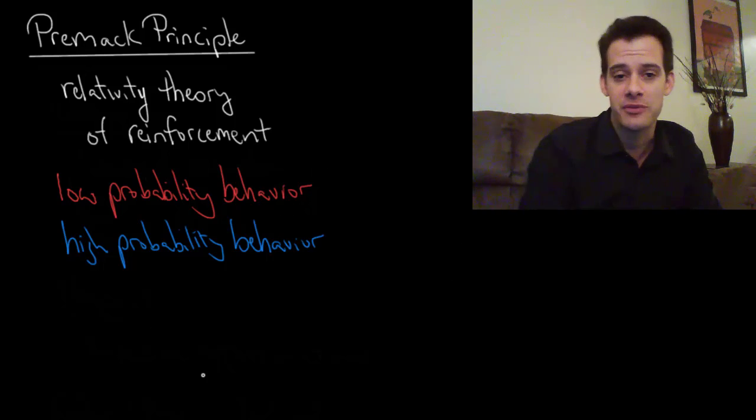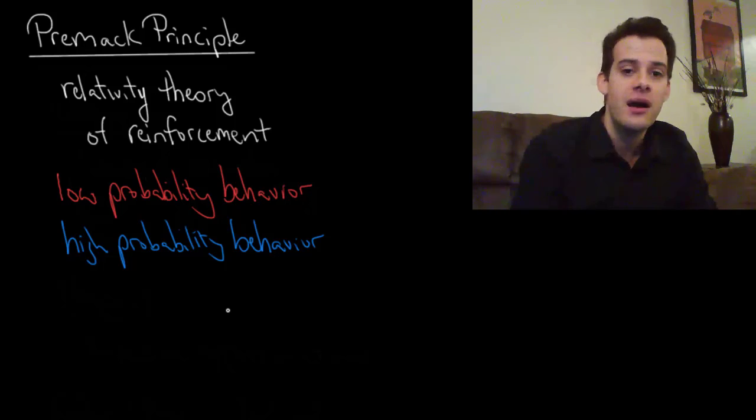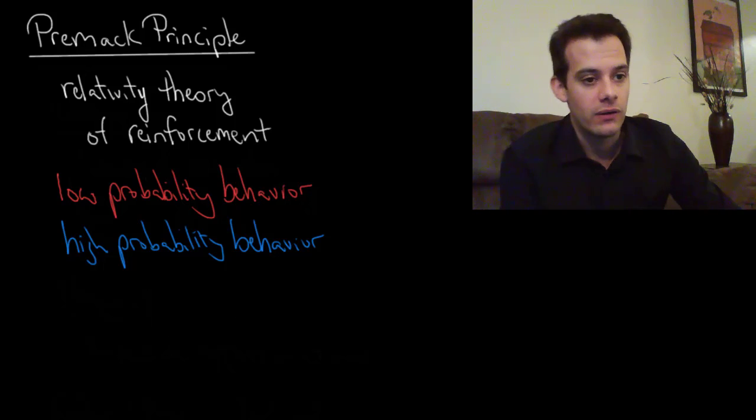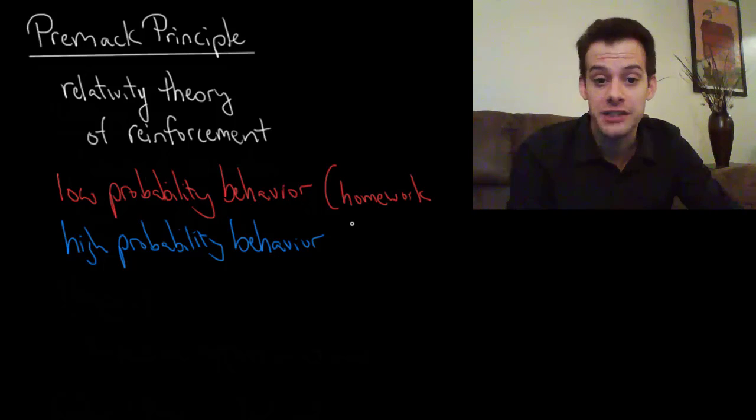Ok, so what would be some examples of this? Well, your parents probably didn't understand the Premack Principle unless they studied psychology but they probably used it when it came to encouraging you to perform certain behaviors. So let's see what would be a low probability behavior when you were a kid. Well, maybe it was doing your homework. Or eating your vegetables. Something like that.